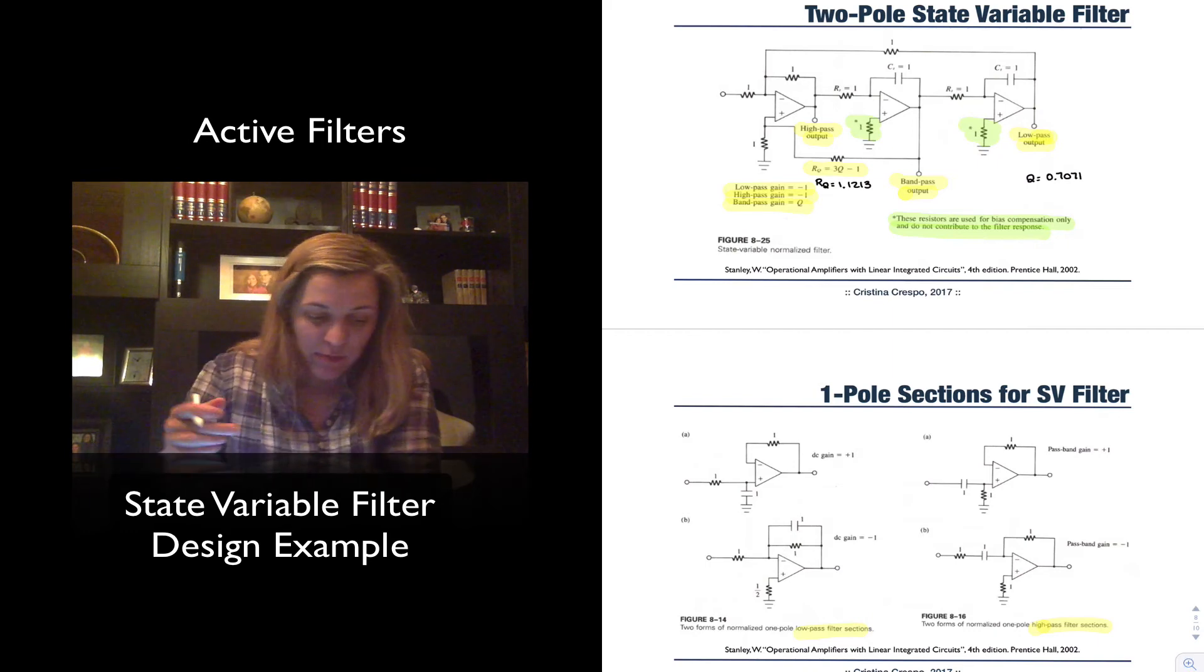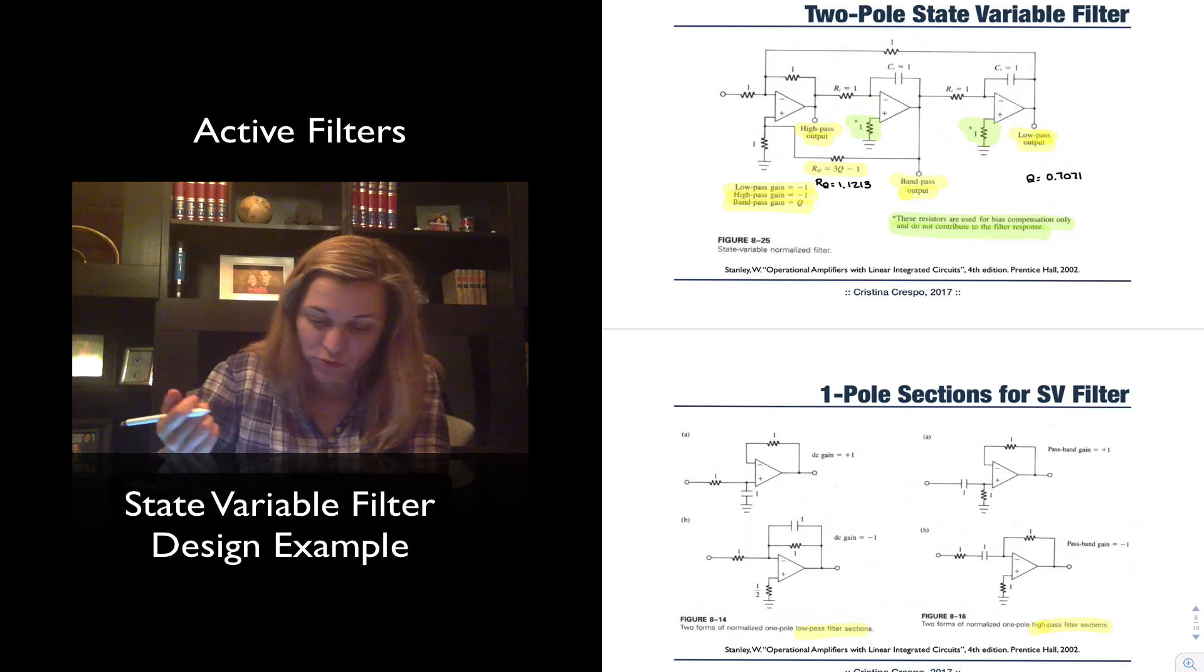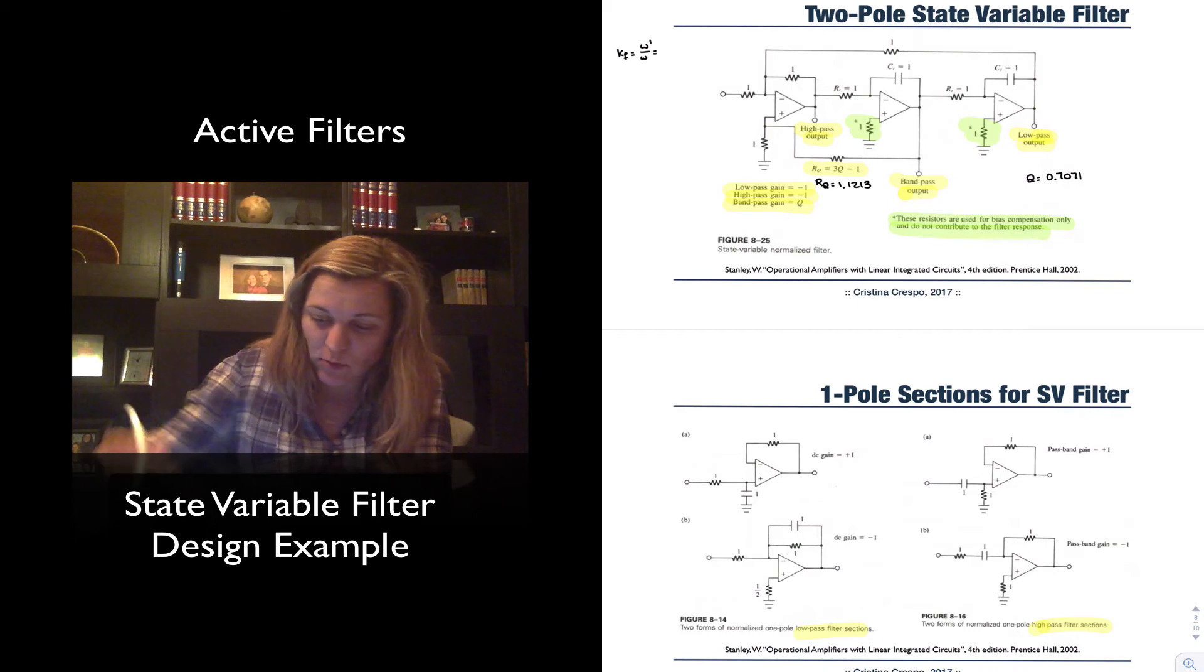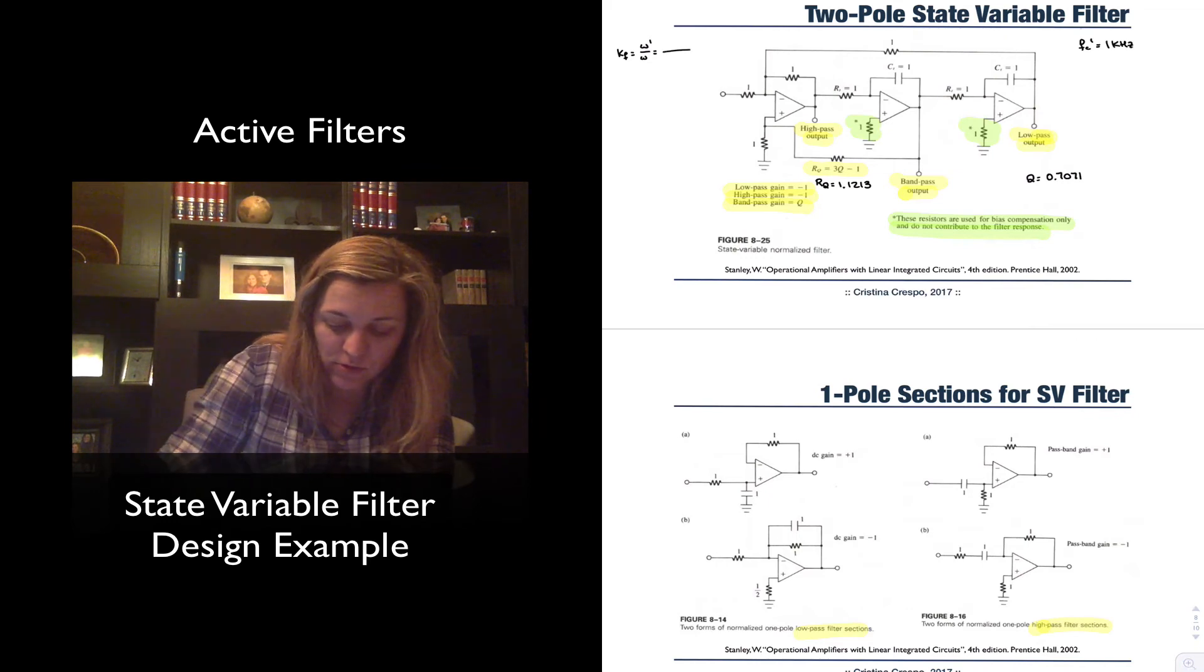Also, just like before, I'm going to perform my frequency scaling. So my kF, my frequency scaling factor, is going to be equal to omega prime over omega. And let's imagine that I wanted my final cutoff frequency fc prime to be 1 kHz for this filter. So I will just do 2 pi times 1k divided by 1 is equal to 6283.2, basically.